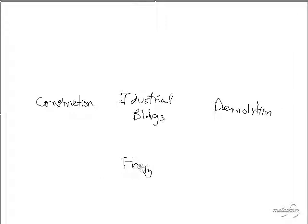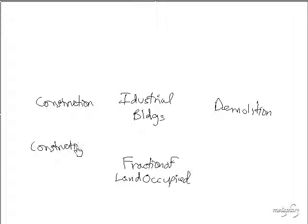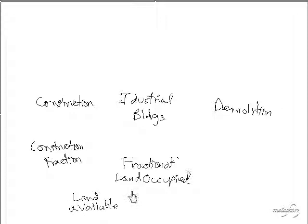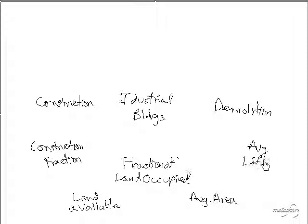We also identify a fraction of land occupied, a construction fraction, land available for industrial buildings, an average area per building, and an average lifetime for buildings. These are all the variables we need for step one.